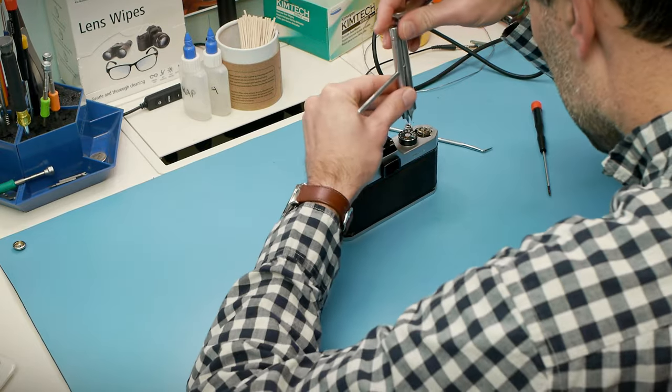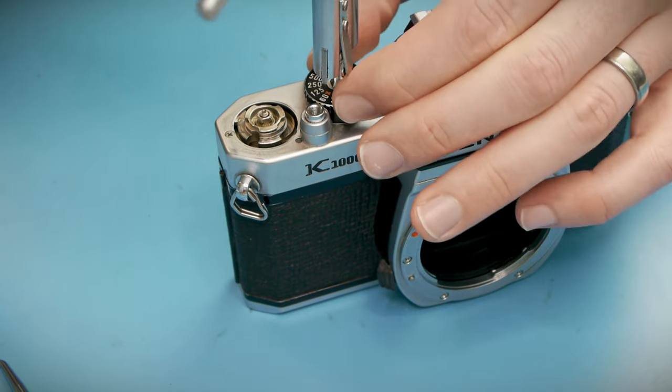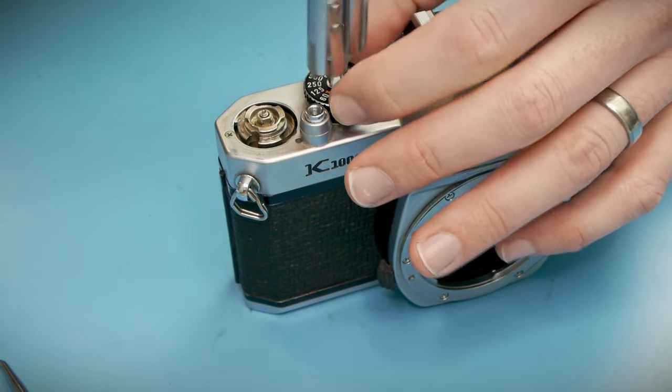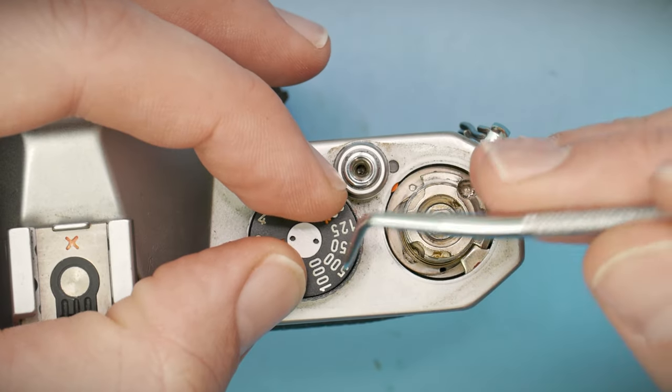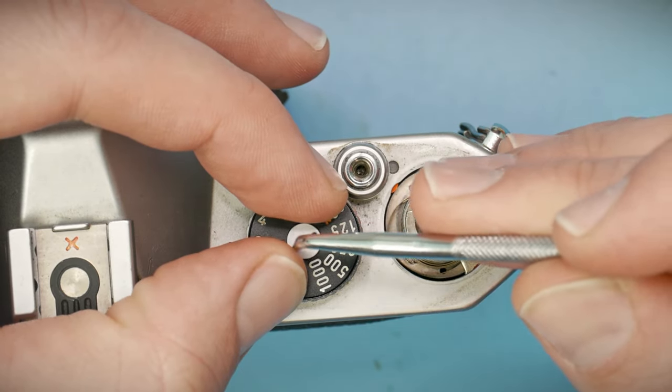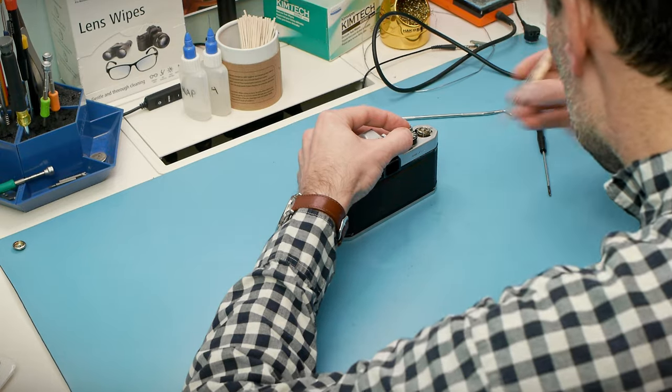The entire shutter speed dial slash ISO selector assembly is held together with just one screw. Pretty simple. The only catch is that it's spring loaded and I need to keep a couple fingers on top of the dial so the whole thing doesn't jack in the box on me when the threads release. As long as I remember to do that, yeah, it's pretty simple.